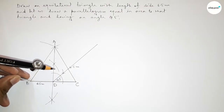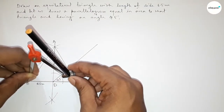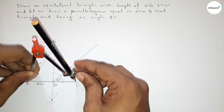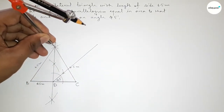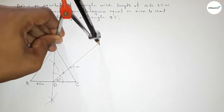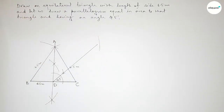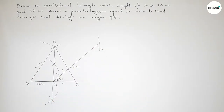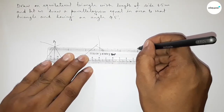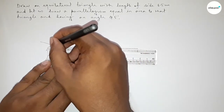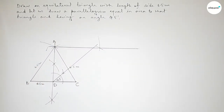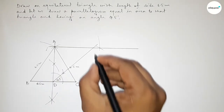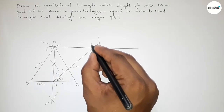Next, taking the length BC equal to 6.5 centimeters using the compass, placing the compass on D and drawing an arc. Then with the same length, cutting arcs so both curves intersect at a point. Joining this line gives a line parallel to BC. We mark this point as E.